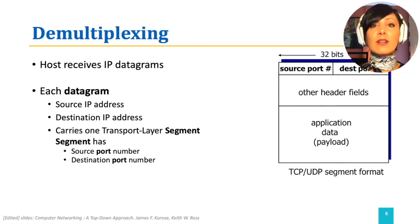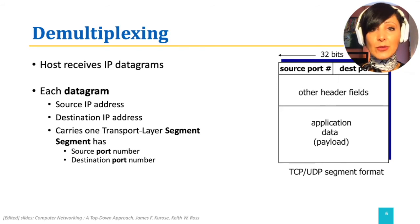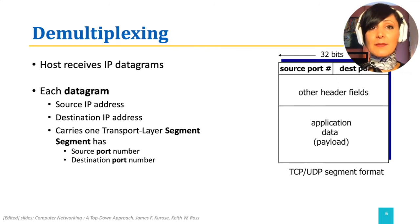Therefore, a process-to-process addressing is a combination of host addressing in the network layer datagram and port addressing in the transport layer segment to locate the process.